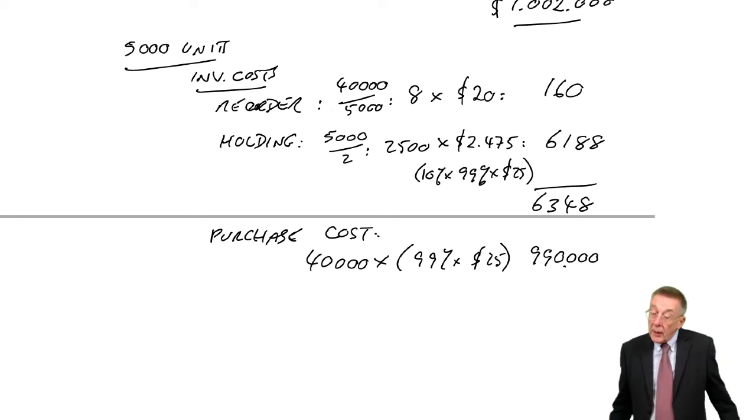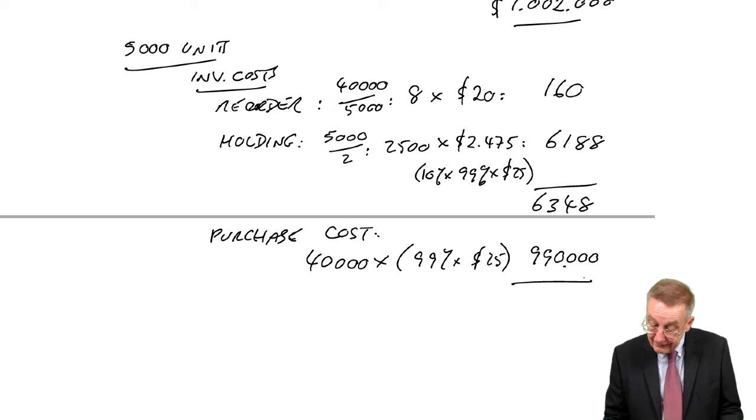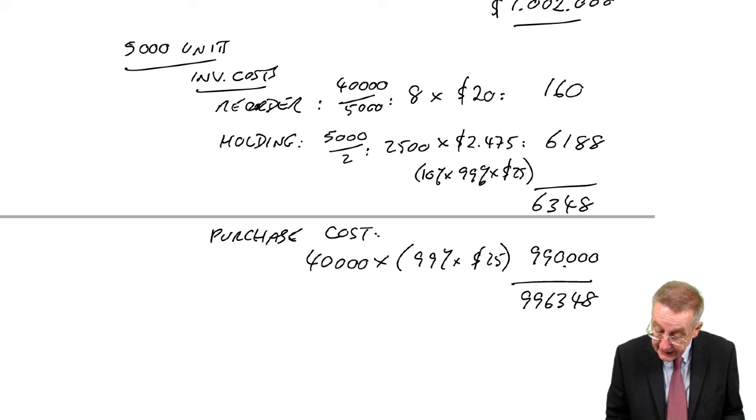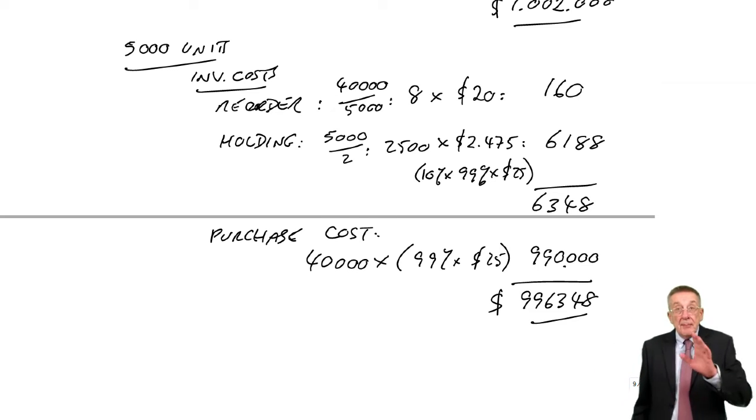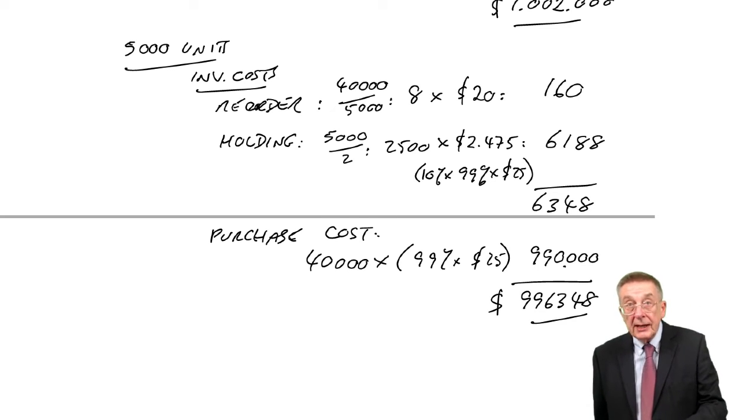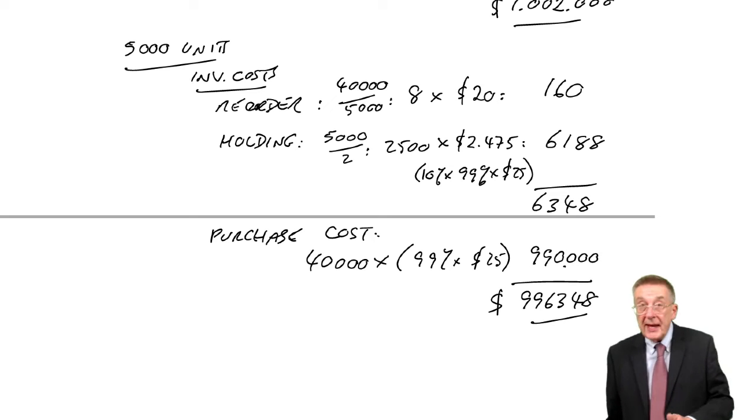So one's gone up, the other's gone down. Well, let's see what happens to the total. The total is $996,348. And so in total, it is cheaper. It would be better to order 5,000 each time than to stick with 800.